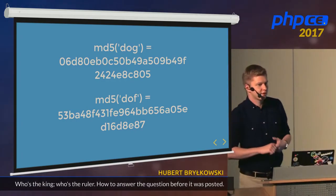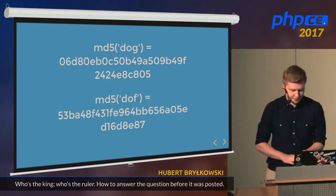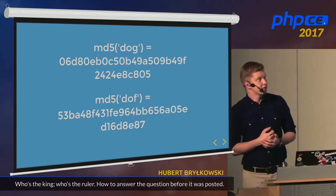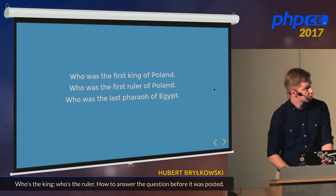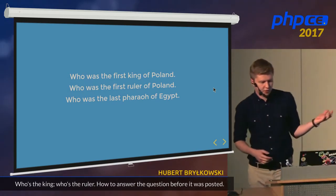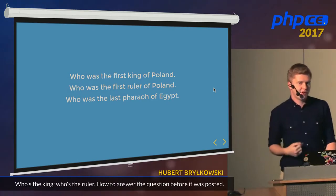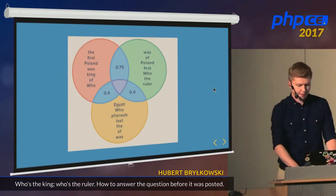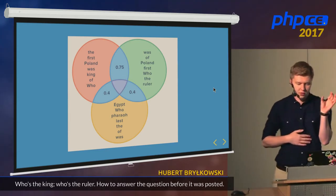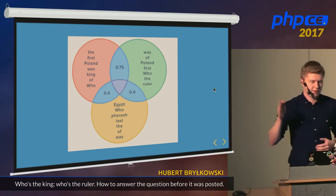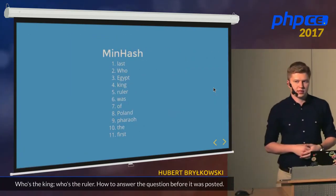Our goal is to find an algorithm that produces the same hashes for near-duplicate questions — for similar ones. I'll use three example questions to explain. We can consider 'Who was the first king of Poland?' and 'Who was the first ruler of Poland?' as duplicates, whereas the third question is unique to the others. Looking at the Jaccard indexes: 0.75 for the duplicate pair, and 0.4 for the unique one — which fits our 0.5 threshold.